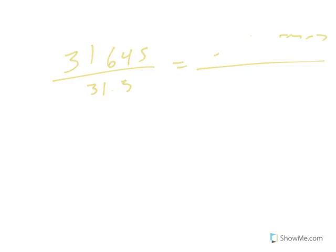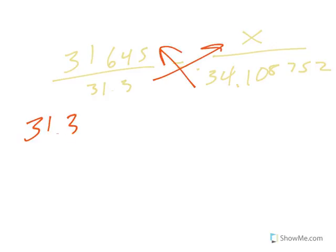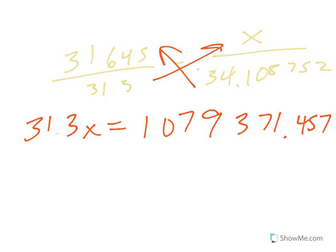So when I cross multiply, I get 31.3x equals, super big number, 1,079,371.457. Now when I first did this, I'll be honest, I forgot to change the Canadian population to millions and my answer was outrageous. That's how I was like, oh my gosh, I didn't change it to millions first.